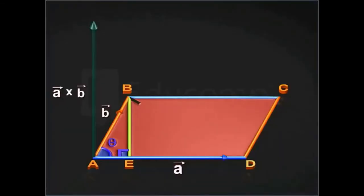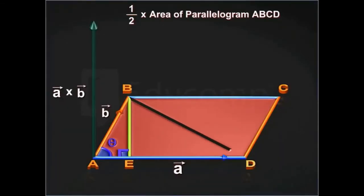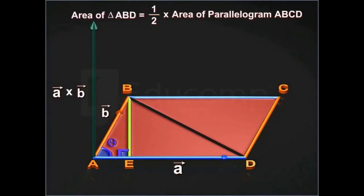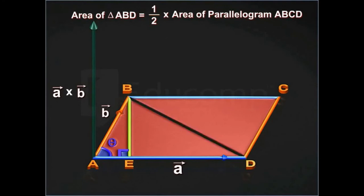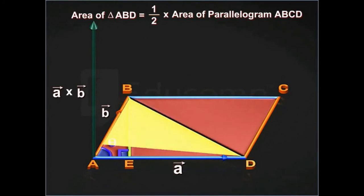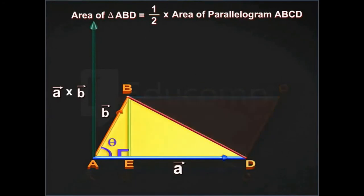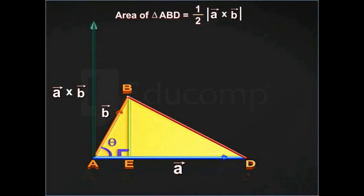Also, half the area of the parallelogram ABCD gives the area of the triangle ABD, as the diagonal of a parallelogram divides it into two congruent triangles. Thus, the area of triangle ABD is equal to half into magnitude of vector A cross vector B.